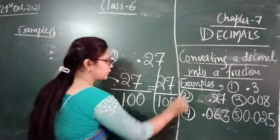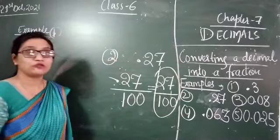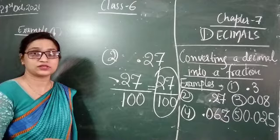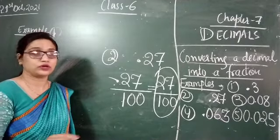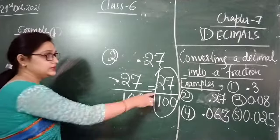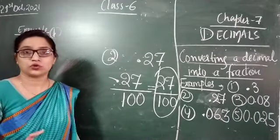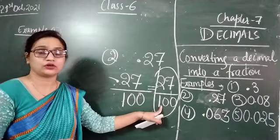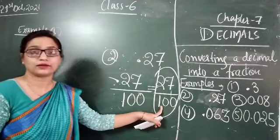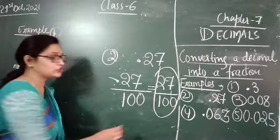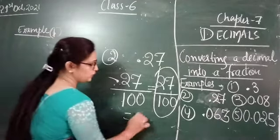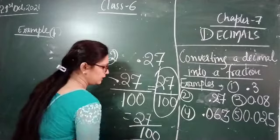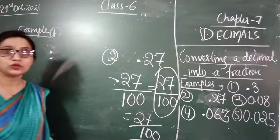So 27 upon 100 is the fraction form — we have converted this decimal into a fraction. We cannot simplify it because 27 and 100 have no common factor; we cannot divide. So the answer will be 27 upon 100.